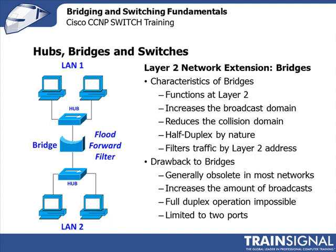Bridges, which we covered in some detail — you probably recognize the graphic to the left already. The characteristics of bridges: they function at layer 2 and they increase the broadcast domain. Notice that the bridge sits in the middle — it creates two collision domains, but it's still one broadcast domain. And the reason why is, if you remember flood, forward, or filter, it's going to pass on all the broadcasts, so there's really no filtering of that. Bridges are half-duplex by nature, but they do filter traffic by layer 2 address based on the table built in memory.